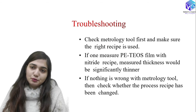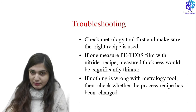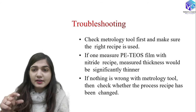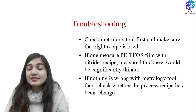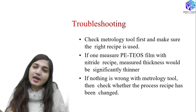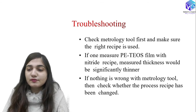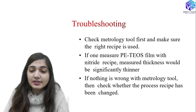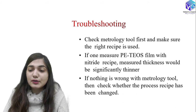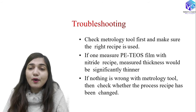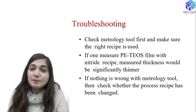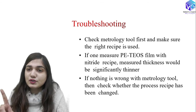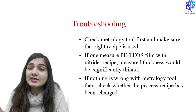We need to check the metrology tools first — how do we measure something? If I am measuring the deposition rate, I need to measure the thickness of the deposited layer very accurately. If the tool does not give accurate results, I might report an error even when no error exists. Also make sure the recipe used is correct: if one measures a PE-TEOS film with a nitride recipe, the measured thickness would be significantly thinner. If nothing is wrong with the metrology tools, then we check whether the process recipe has changed.